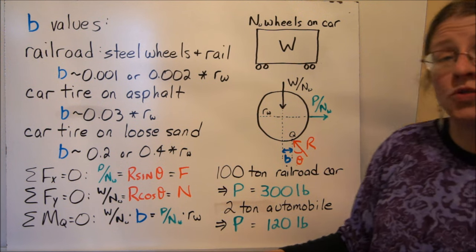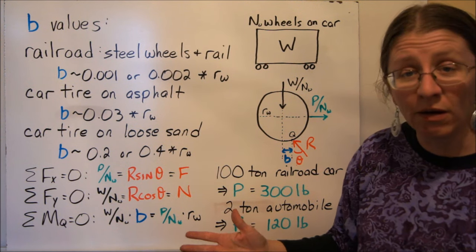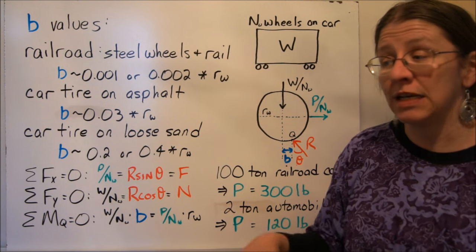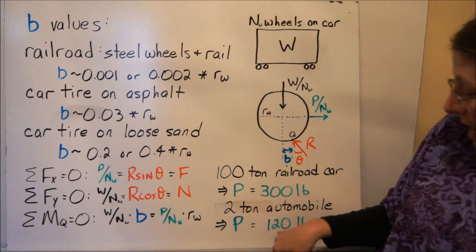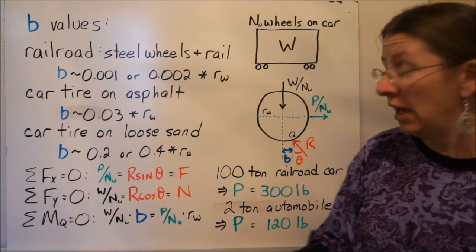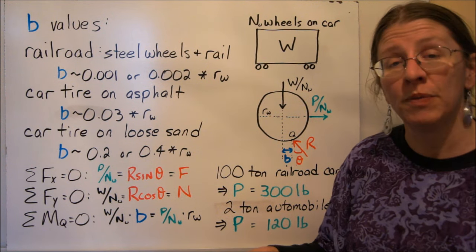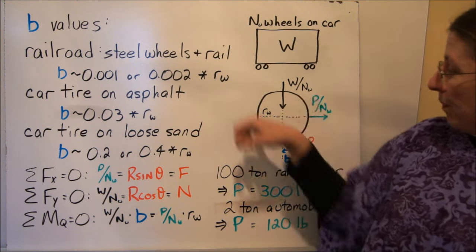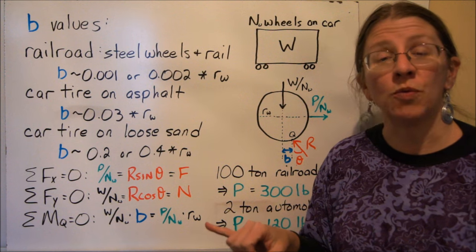This is different than like a 2-ton, 4,000-pound car. A 4,000-pound car might take 120 pounds to keep the car going. Now that doesn't actually move nearly as much stuff as the 100-ton railroad car, which is why we use railroads.